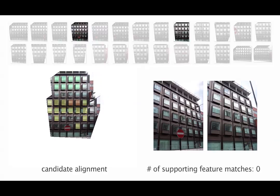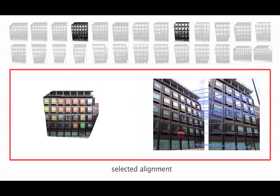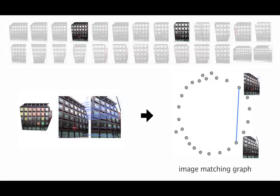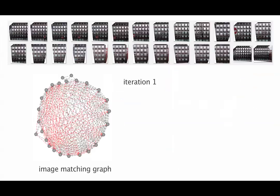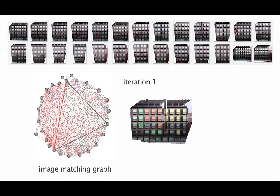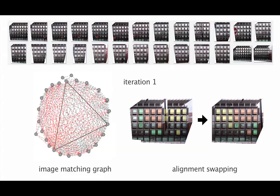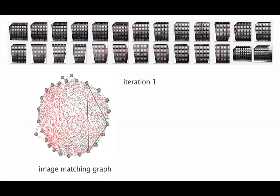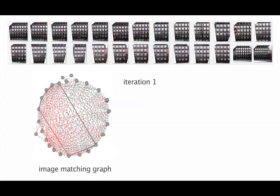Intuitively, our goal is to position each rectified image on a global regulatory grid. We achieve this goal by an iterative graph-based global analysis wherein the candidate alignments are progressively refined by discarding the discovered inconsistencies in the image-based correspondences. Please refer to the paper for details.